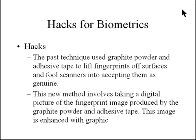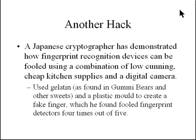They improved the method by taking a digital picture of a fingerprint image produced by graphite powder and adhesive tape, then enhancing it with special graphic filters. They found they could fool the authentication system about 80% of the time. A Japanese cryptographer also used gelatin like that found in gummy bears and a plastic mold to create a fake fingerprint, which fooled fingerprint detectors four times out of five — also 80%.